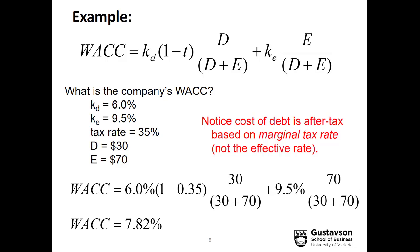Now think about that for a moment. The upper bound is 9.5% if the company was entirely financed with equity. 7.82% is below that. The cost of debt is 6%, but after adjusting for taxes is more like 4.5%. 7.82% is roughly 30% towards the cost of debt at 4.5% and 70% towards the cost of equity at 9.5%, so it makes sense that it's somewhere in between those two costs.